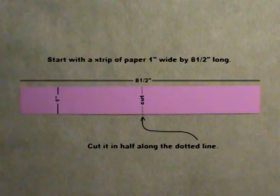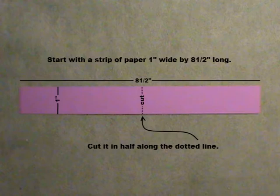Start with a strip of paper one inch wide by eight and a half inches long. Cut it in half along the dotted line.